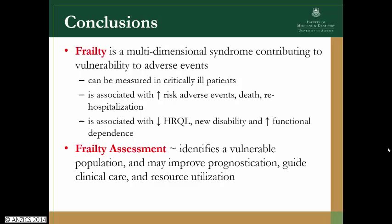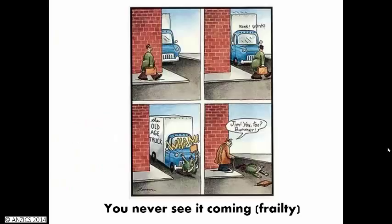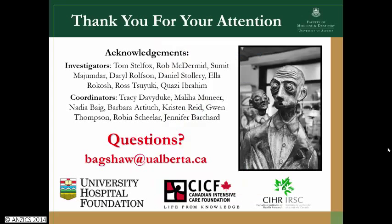In terms of frailty as a therapeutic target, it is less well defined and I think there's lots of opportunity. One of my colleagues, a geriatrician, gave me a Far Side comment — I just want you to substitute 'old age' for 'frailty,' because you don't have to be old to be frail. In our study, among patients aged 50 to 64, the prevalence of frailty was 28% — quite striking. I'd like to thank the University Hospital Foundation, the Canadian Intensive Care Foundation, and CIHR for funding, and acknowledge all my investigators and the team of coordinators. Thank you to ANZICS for the opportunity to speak.